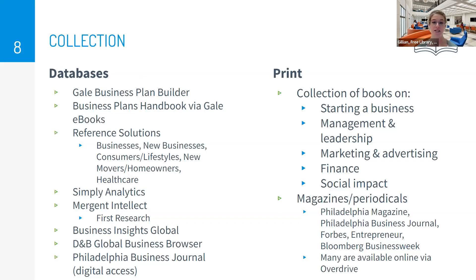Our collection is both digital and physical. We offer a suite of databases to help with writing a business plan, crafting a competitive analysis, demographic research, market research, and generating sales lists. All the databases are available with your library card number and PIN from anywhere. We'll talk about some of these databases individually shortly. We also have a collection of print materials, including a small and curated collection of business books and magazines, and many of these magazines are also available online via a resource called OverDrive.